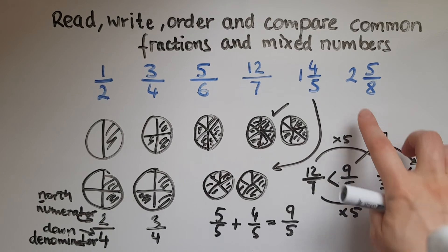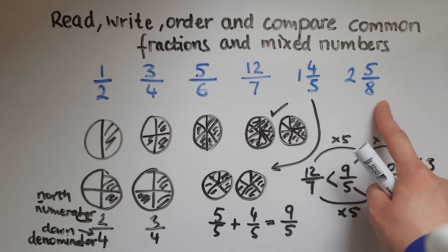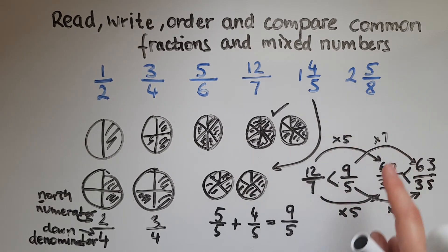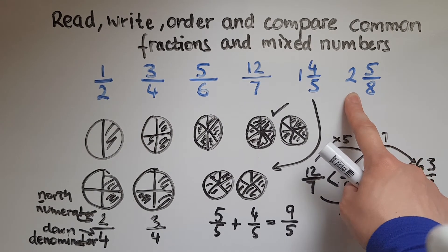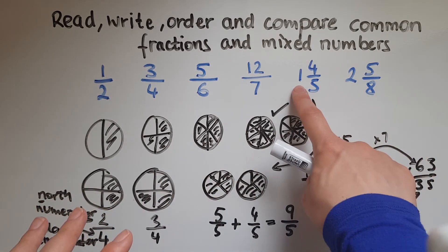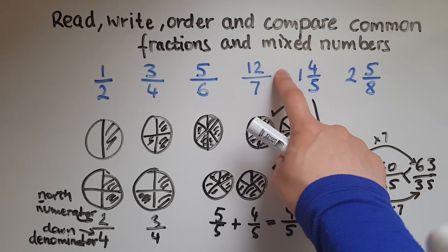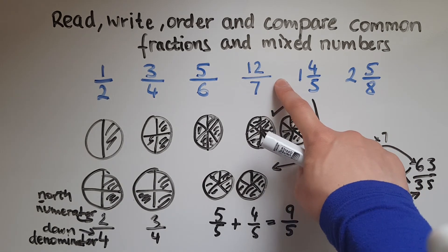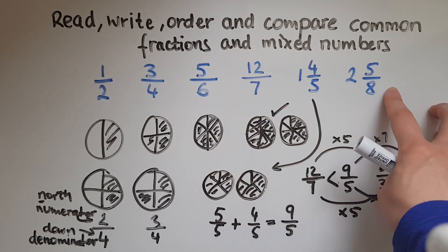If I compare two and five eighths with any of these numbers, it has to be the biggest one. Why? Because we're talking about two whole pizzas, or two whole metres — two whole ones. None of the others had two whole ones: one and four fifths had one whole, and twelve sevenths was one whole and five sevenths. So two and five eighths is the biggest.